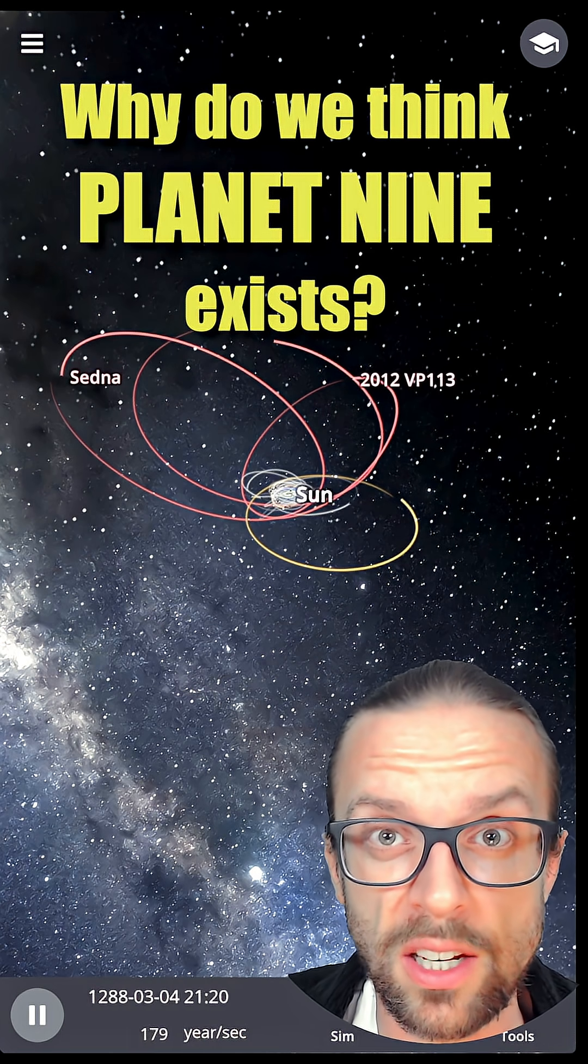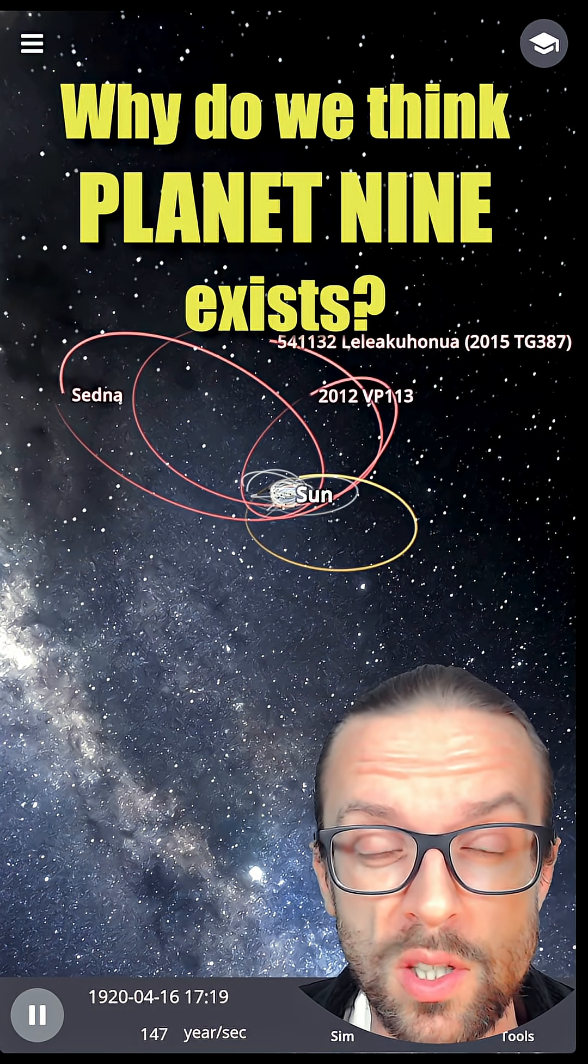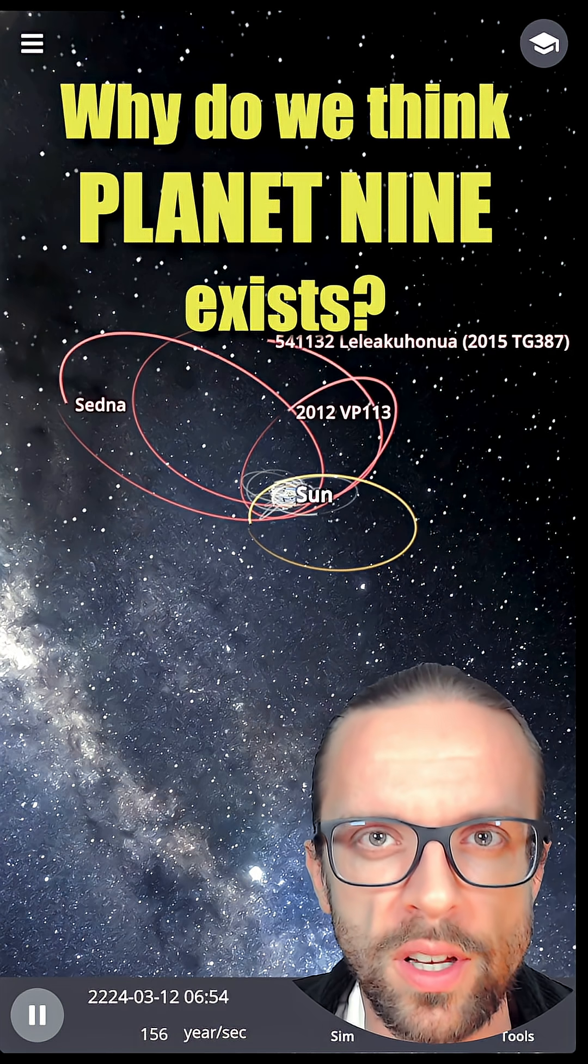Have you ever heard about the Sednoids? It's a group of objects in the outer part of the solar system way beyond Pluto in the very dark spaces of the cosmos.